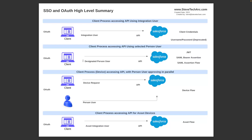We designate a person user and the client process will operate through the API as that user. There are a couple of different flows that support this: the JWT flow, the SAML bearer assertion flow, and the SAML assertion flow. These are the flows that allow a client process to operate on behalf of a particular person user.